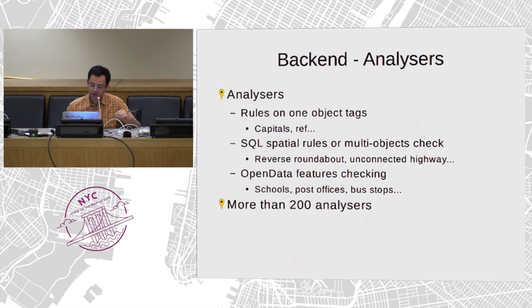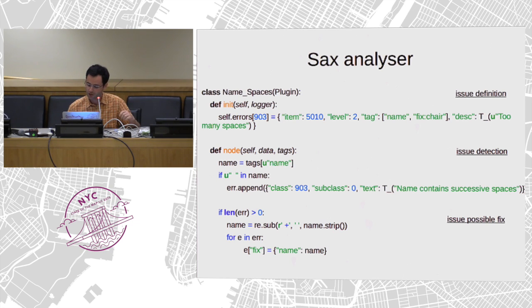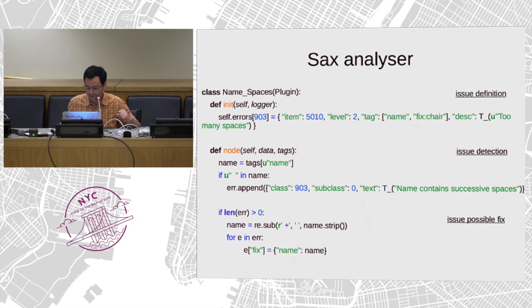There are different kinds of backend analyzer. The first and simplest is based on one object — we check the tags of an object and report an error on one object at a time. As a simple example: we define an error type like 'too many spaces' or a successive space. We set that the error is about the name and can be fixed from an armchair. Then we have a simple test written in Python, and a possible fix by simply removing the successive space.